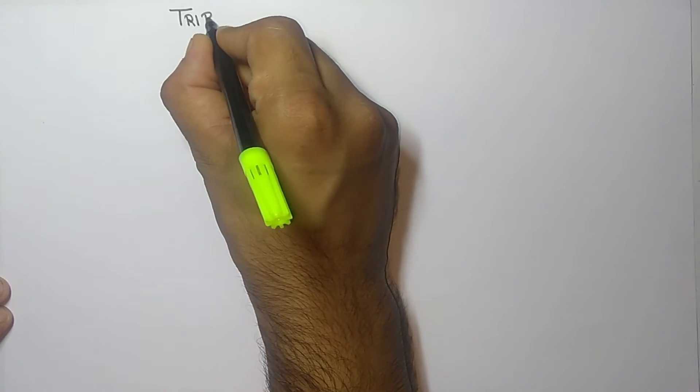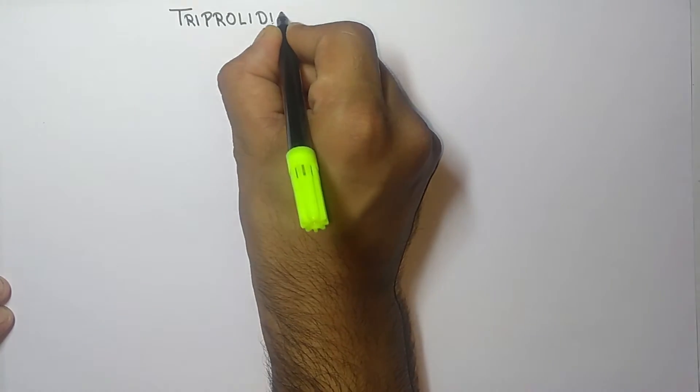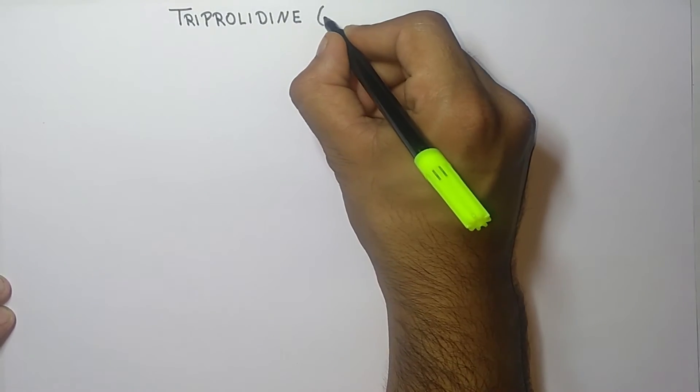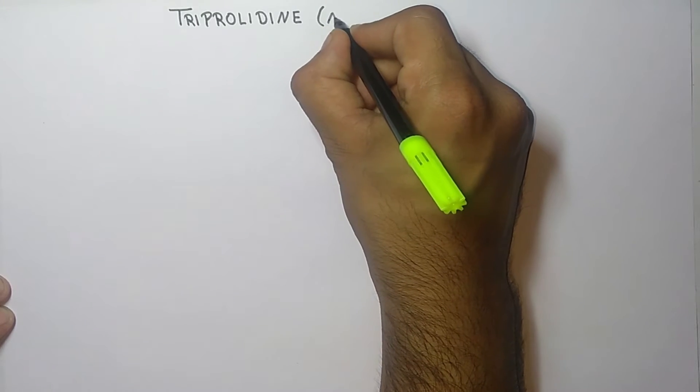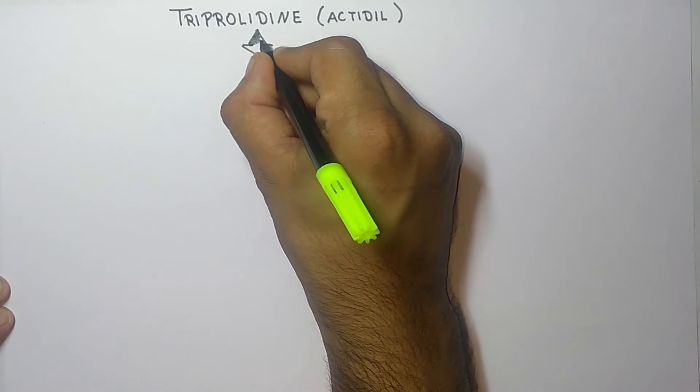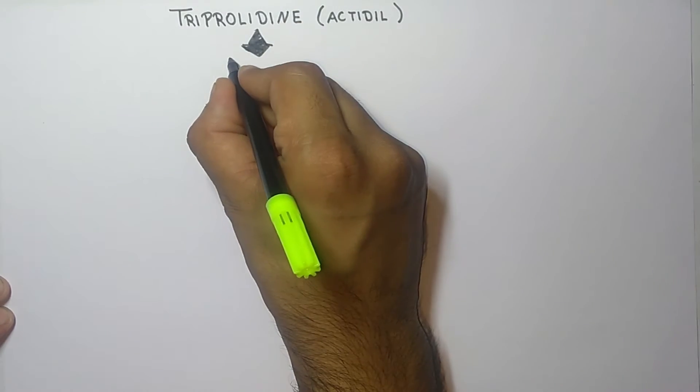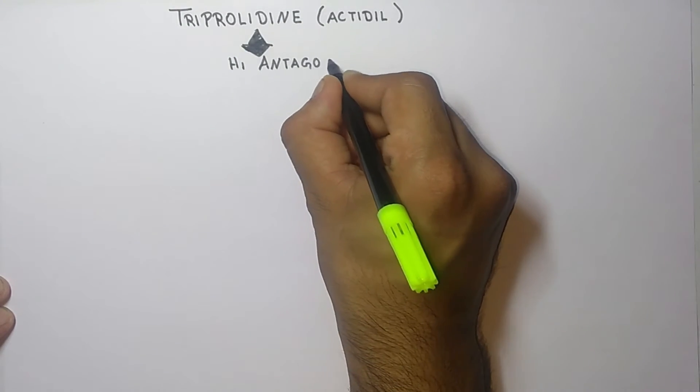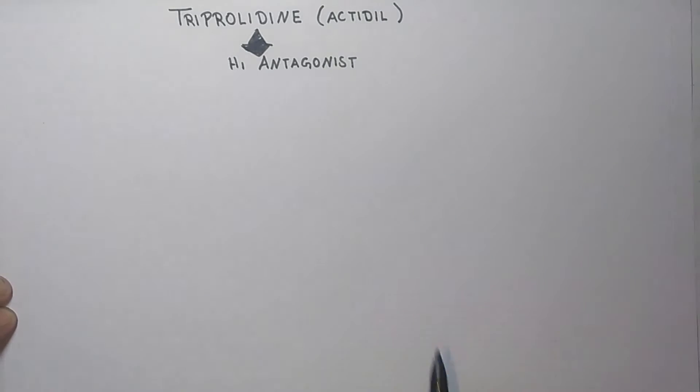Hello students, welcome to the channel. Today in this video we are going to discuss the synthesis of triprolidine, which is an H1 antagonist. It is also known as Actidil. So let's discuss the synthesis of triprolidine.